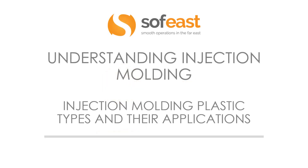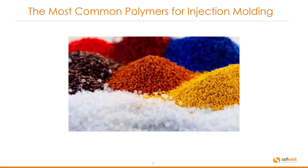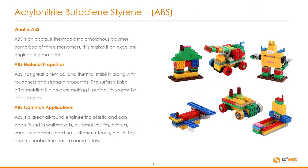Welcome to another video in the series of understanding injection molding. Here we're going to be focusing on injection molding plastic types and their applications. This is what the raw polymers look like — they come in pellet formats and you can see different colors. We're going to be covering the most popular plastics in this video, not all of them, as there are thousands of different types. We'll focus on just the top five or six.